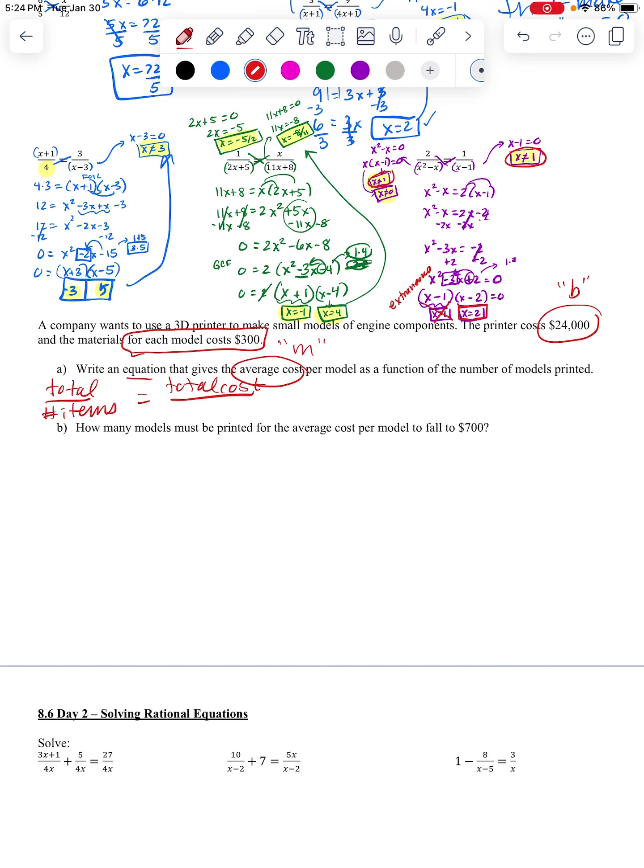All righty. Well, we don't know how many models there are, so the models is going to be, the number of models is going to be our X. So we're doing the total cost divided by the number of models. But the number of models is unknown, so that's going to be an X. Now, for the total cost, it's going to be the $24,000 that you have to pay just for the materials, plus you pay $300 per model.